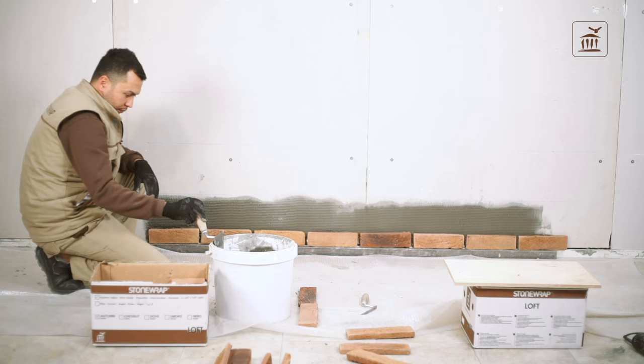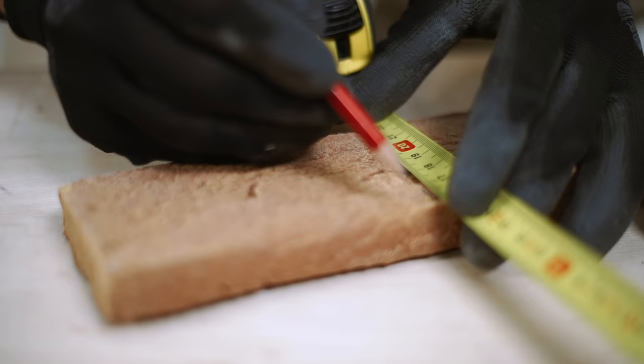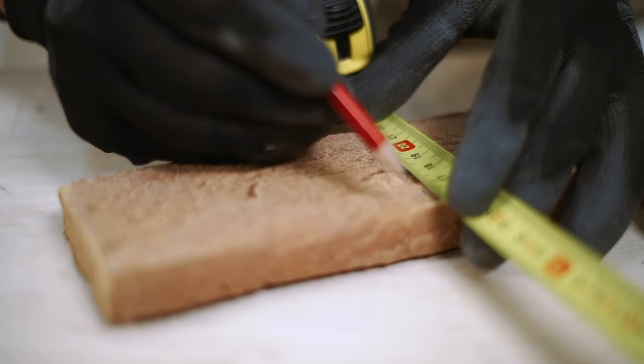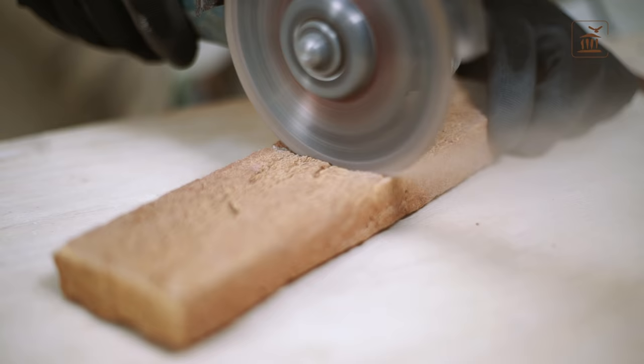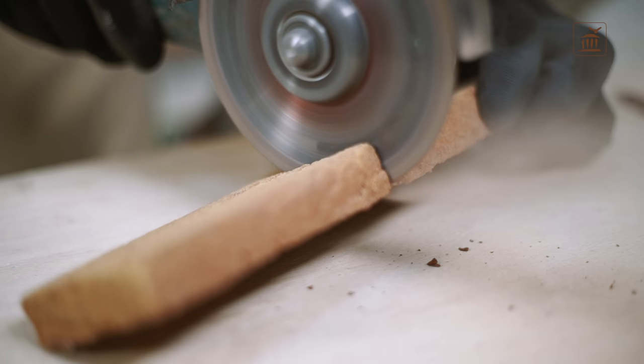Begin the second row with a half brick. This way you can achieve a higher visual impact. Use a grinder with diamond blade to cut the brick properly. In the production of stone wrap brick veneers, top quality iron oxides are used for coloring and the mixed color spreads over the entire brick.